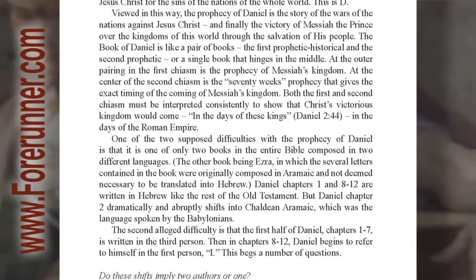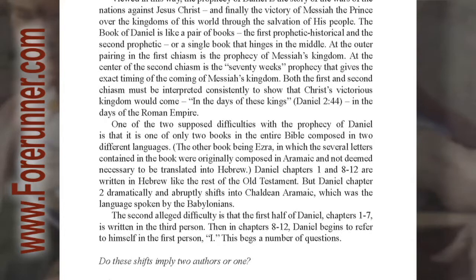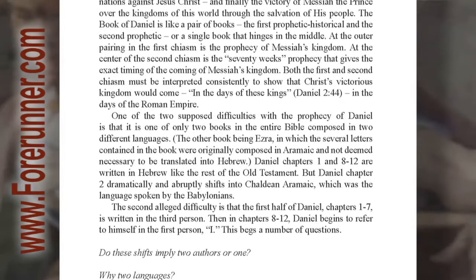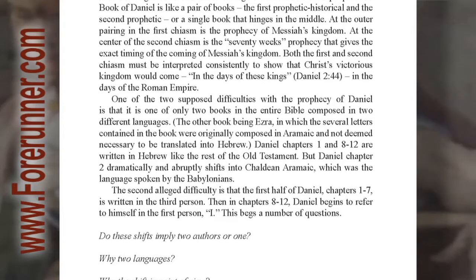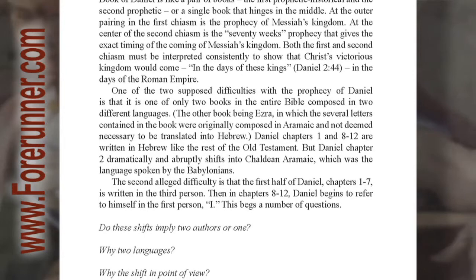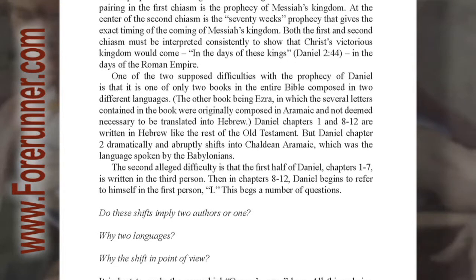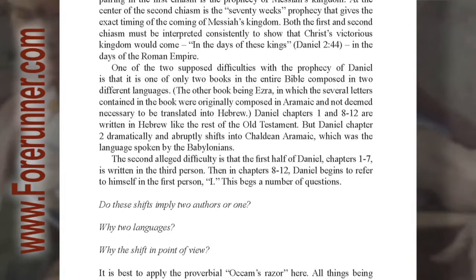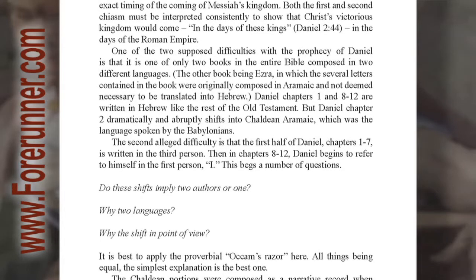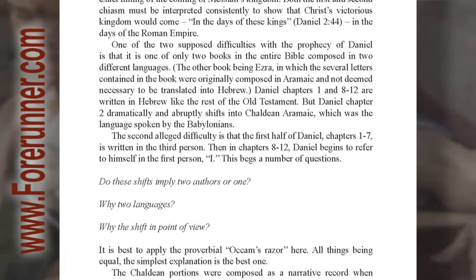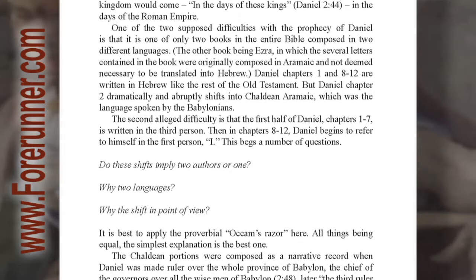Viewed in this way, the prophecy of Daniel is the story of the wars of the nations against Jesus Christ, and finally the victory of the Messiah, the Prince, over the kingdoms of this world through the salvation of his people. The book of Daniel is like a pair of books — the first prophetic-historical and the second prophetic — or a single book that hinges in the middle. At the outer pairing in the first chiasm is the prophecy of Messiah's kingdom. At the center of the second chiasm is the 70 weeks prophecy that gives the exact timing of the coming of Messiah's kingdom. Both the first and second chiasms must be interpreted consistently to show that Christ's victorious kingdom would come in the days of these kings (Daniel 2:44), in the days of the Roman Empire.